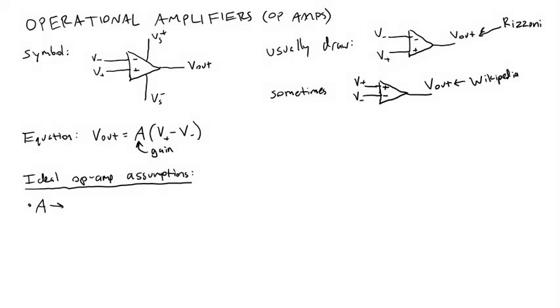One is that the gain is infinity. Another is that the inputs draw no current, so I-plus equals I-minus equals zero. And those two assumptions are always true for an ideal op-amp.